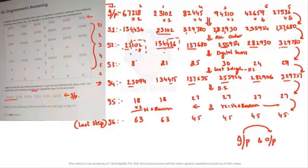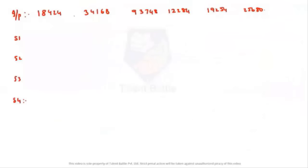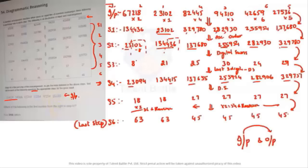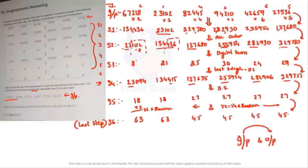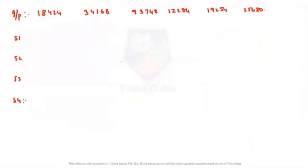For reference, the given input is: 1 8 4 2 4 3 4 1 6 8 and so on — you can take a screenshot and check. Now I have to follow the same rules. From input to step one, multiply each number by 1, 2, 3, 4, 5, and 6 respectively.